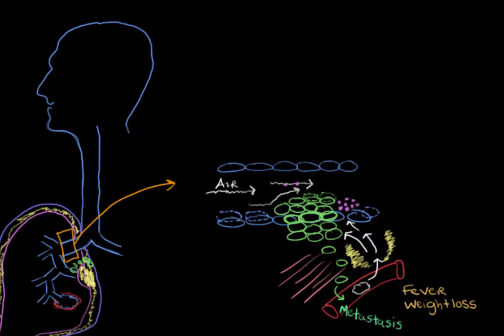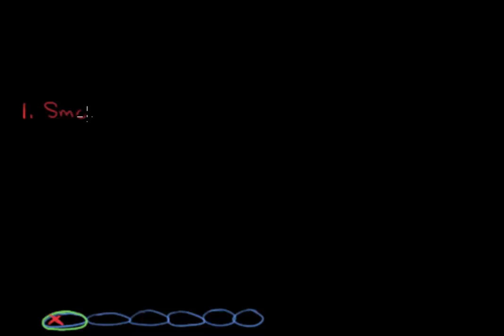Now that we know the reasons for many signs and symptoms of lung cancer, you might wonder what actually causes a cell to become cancerous in the first place. In lung cancer there are three main causes of mutations, one of which is smoking. Smoking is so strongly tied to the development of lung cancer that there's actually a unit of measure to determine how at risk a person is, depending on how often and how long they've smoked.